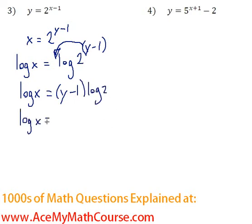So here we have log x equals, now I need to distribute the log 2, y times log 2, y log 2, and minus 1 times log 2, or negative 1 times log 2 is negative log 2.